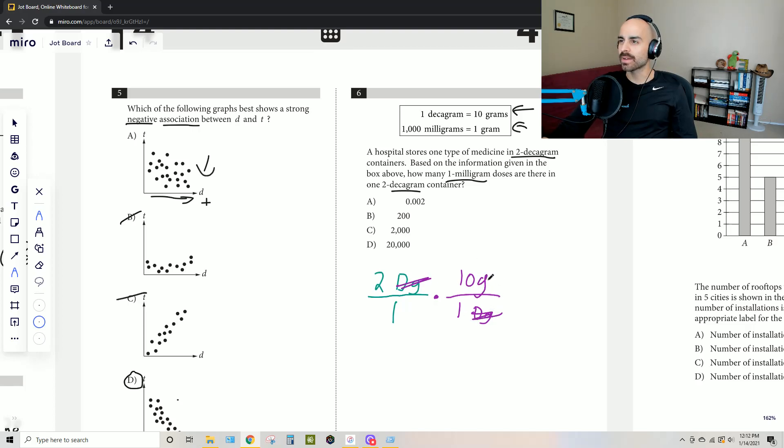And now that we have grams, we want to get rid of that. How can we get rid of that? Well, thankfully they tell us here that one gram is 1000 milligrams, which is actually exactly what they're asking for—how many milligram doses. And now that we have this all lined up, we see that grams canceled out with grams, and all we're left with in terms of units is milligrams.